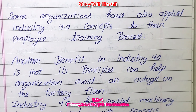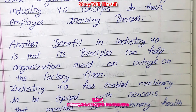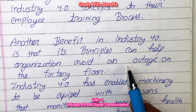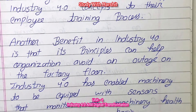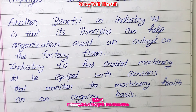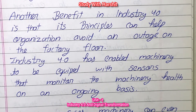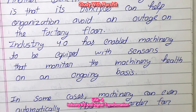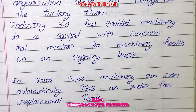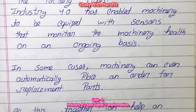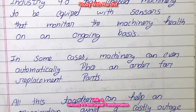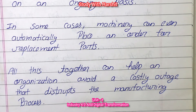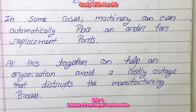Another benefit of Industry 4.0 is that its principles can help organizations avoid outages on the factory floor. Industry 4.0 has enabled machinery to be equipped with sensors that monitor machinery health on an ongoing basis. In some cases, machinery can even automatically place an order for replacement parts, helping an organization avoid a costly outage that disrupts the manufacturing process.